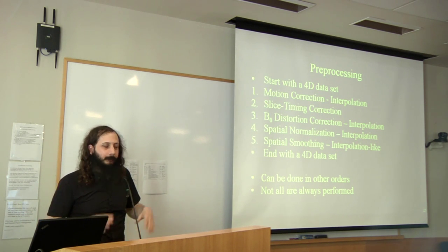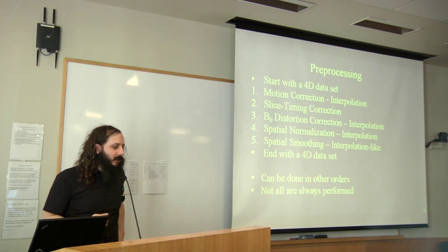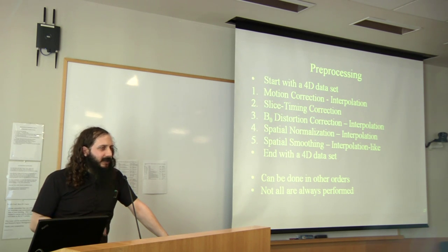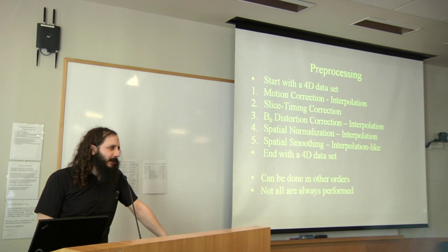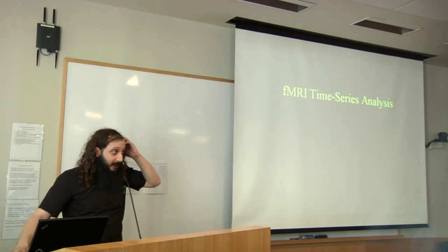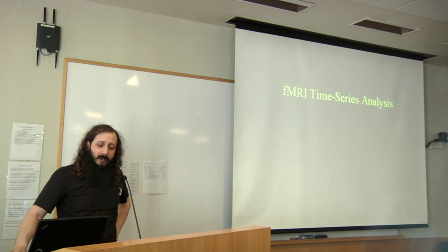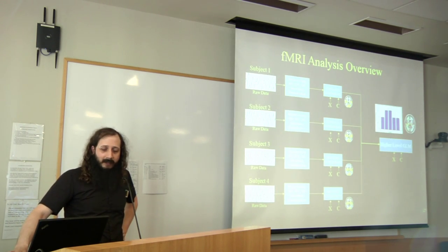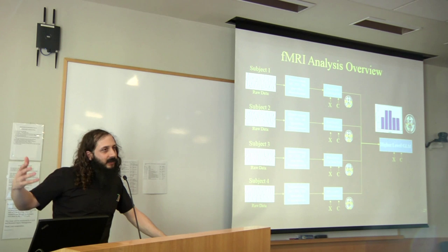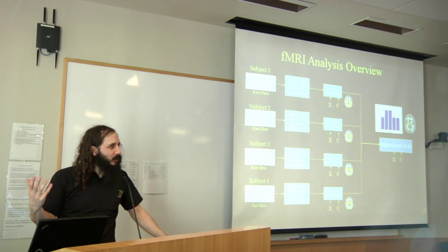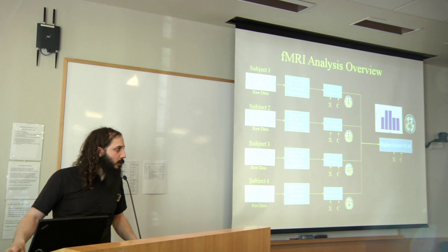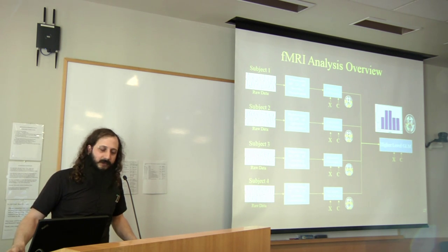To recap pre-processing: motion correction, slice timing correction, B0 distortion correction, spatial normalization, and spatial smoothing — ending with a 4D dataset. Not all of these steps are performed every time; it depends on the criteria of your experiment. Now moving to fMRI time series analysis. Here again is the fMRI analysis overview: we start with raw data across all subjects, perform pre-processing to get 4D datasets per subject that conform to our analysis assumptions, perform GLM analysis to get one 3D volume per subject, then combine those in a higher-level GLM. Now we'll talk about this first-level GLM analysis.